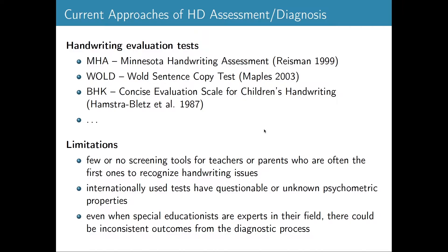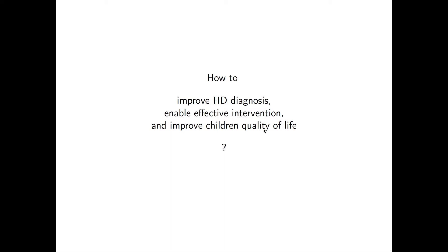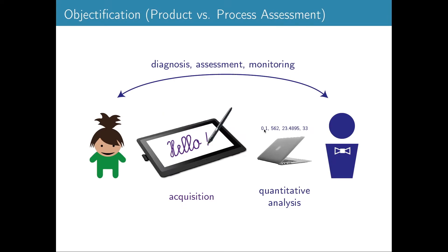Based on this, a few years ago we came up with the question: how to improve diagnosis of handwriting difficulties, and indirectly how to enable effective intervention and improve children's quality of life. The concept we use involves digitizers — in our case Wacom technology — where we collect handwriting or drawing from children, process this online handwriting with signal processing algorithms and machine learning that extract features describing symptoms, and then provide experts with numbers for diagnosis, assessment, or monitoring.